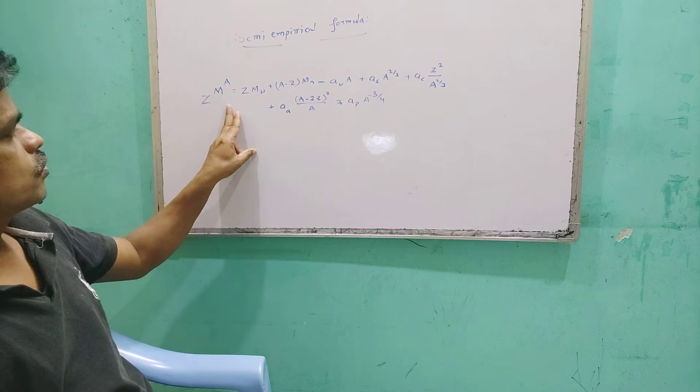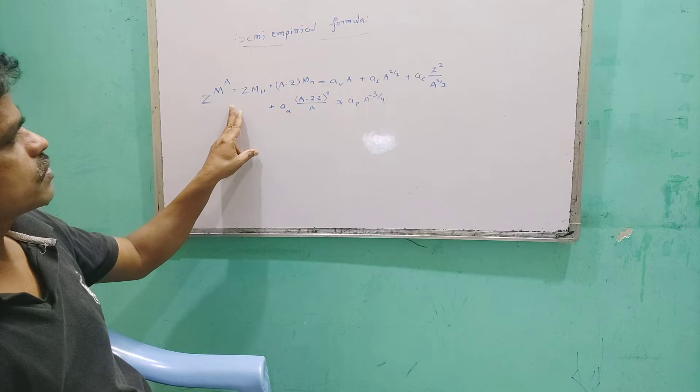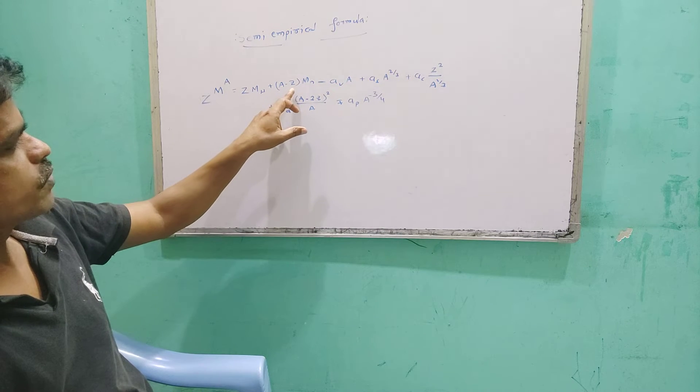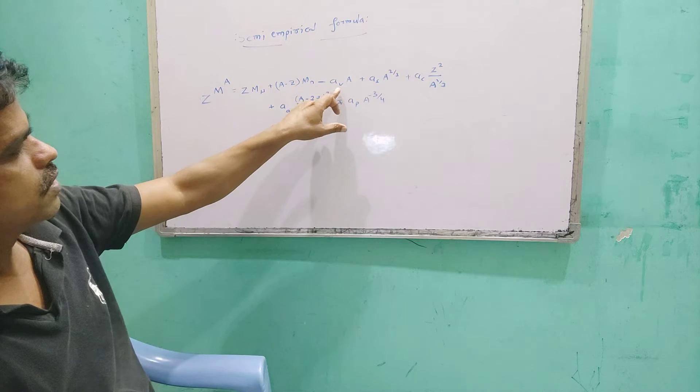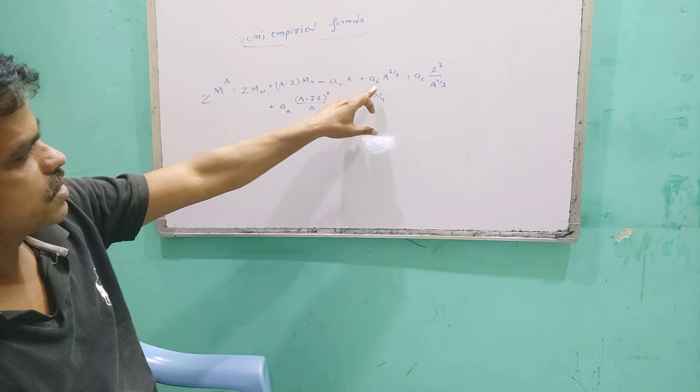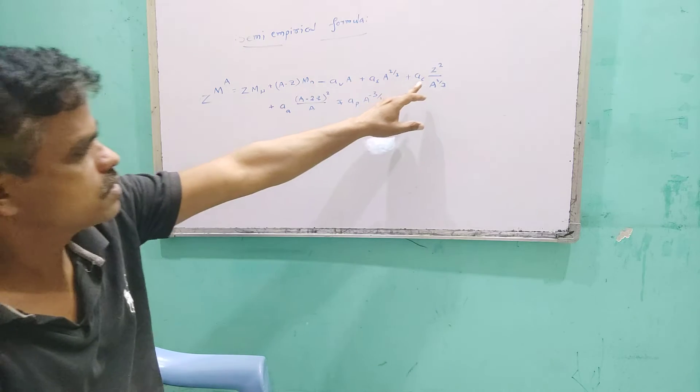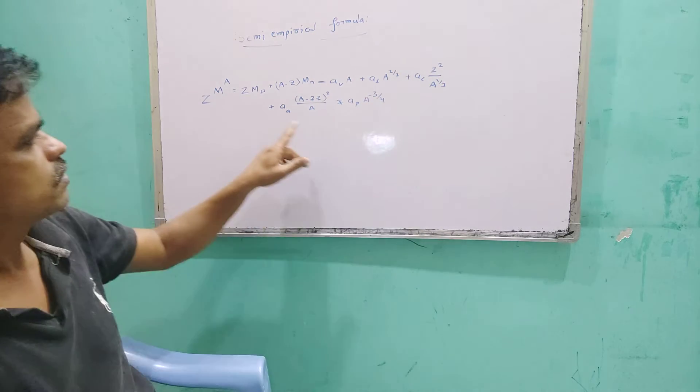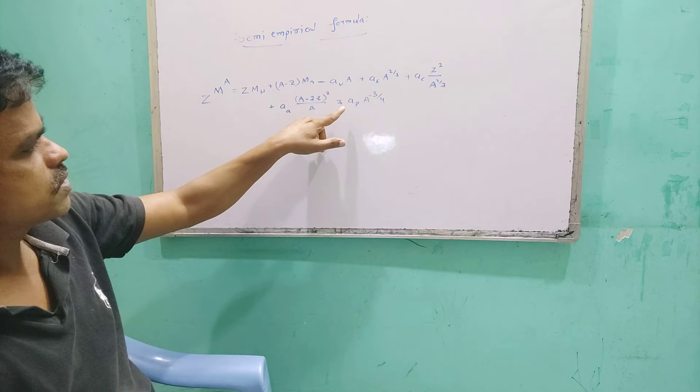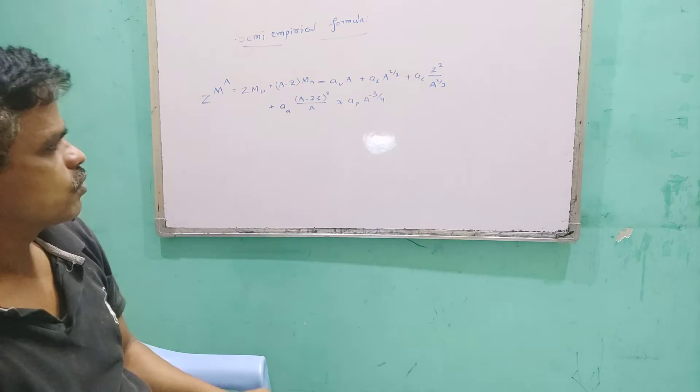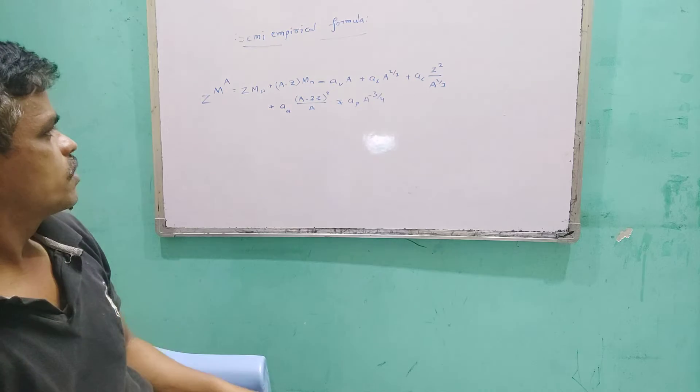So ZMA equals mass of the nucleus equals ZMH plus (A minus Z)MN mass of neutrons, minus AV*A plus AS*A^(2/3), plus AC*Z^2*A^(1/3), plus AA*(A minus 2Z)^2/A, plus AP*A^(-3/4). So here actually we have...